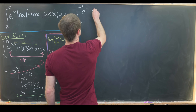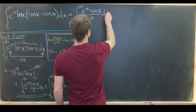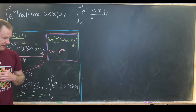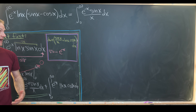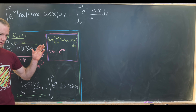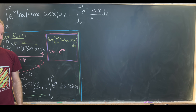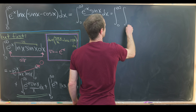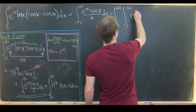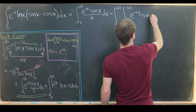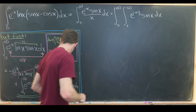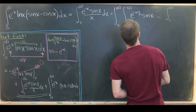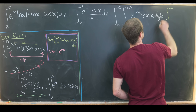A quick limit argument shows the boundary term goes to zero: the exponential beats out the logarithm as x goes to infinity, and the sine function beats out the logarithm as x goes to zero. We're left with the two integrals. But notice one of them appears inside our original integral with the opposite sign — so it cancels — and we're left with just the integral from zero to infinity of e to the minus x times sine of x over x dx.